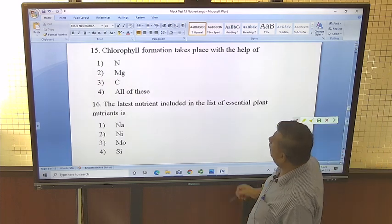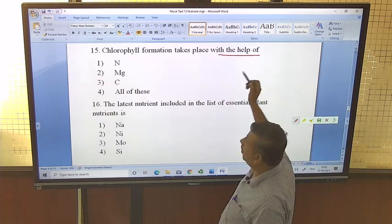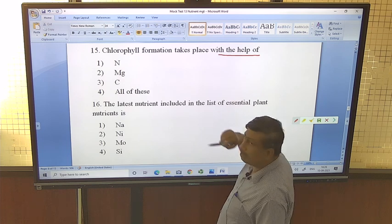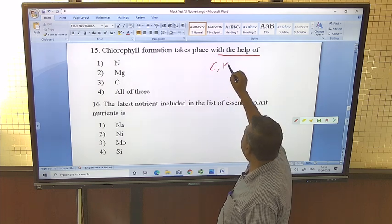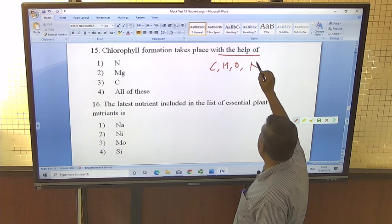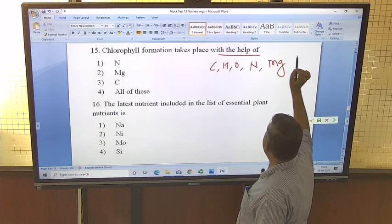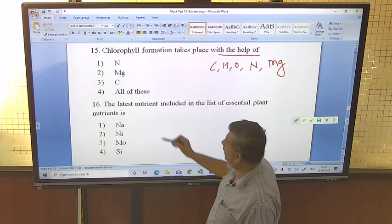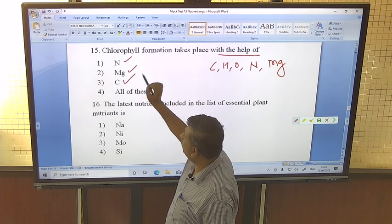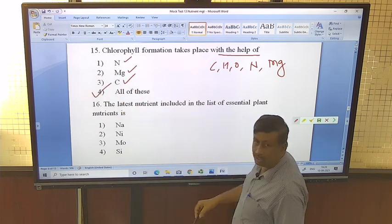Chlorophyll formation takes place with the help of - similarly, all the biological molecules have CHO and chlorophyll has nitrogen and magnesium. Here nitrogen is part, magnesium is part, carbon is part, so answer is all of these.